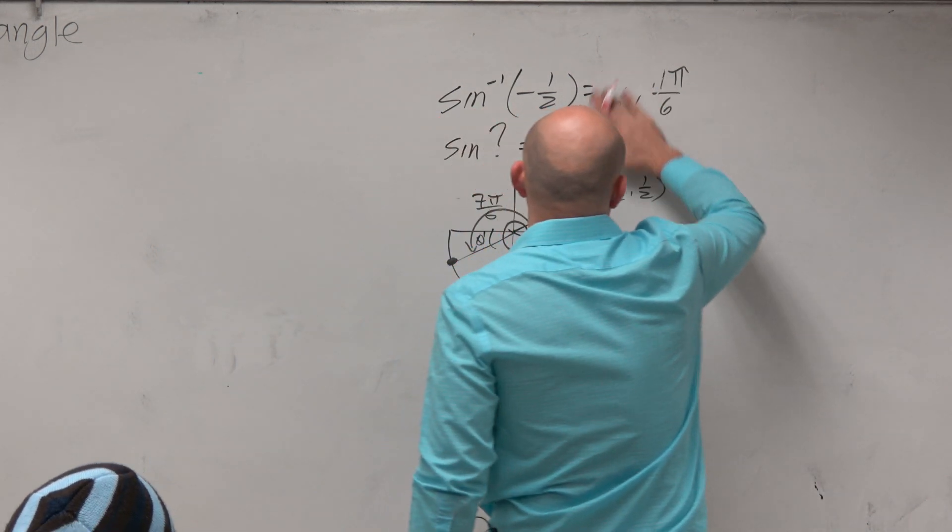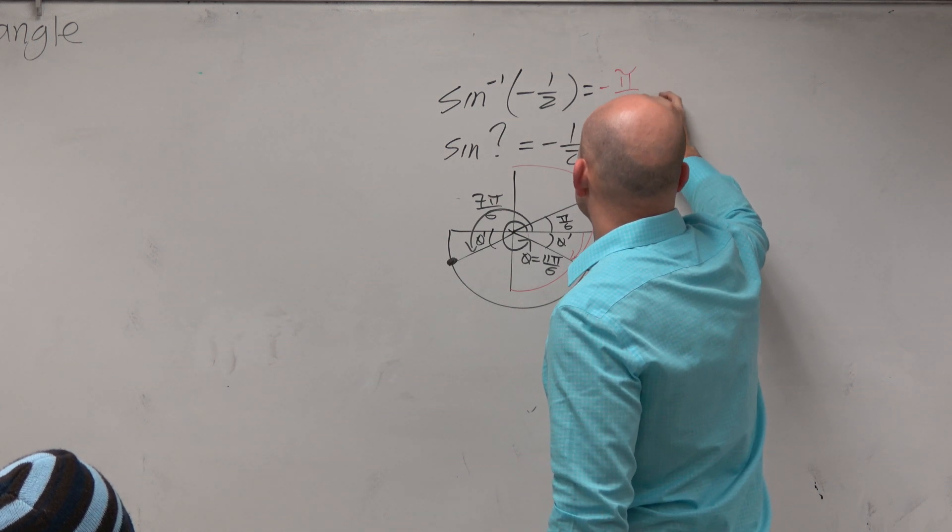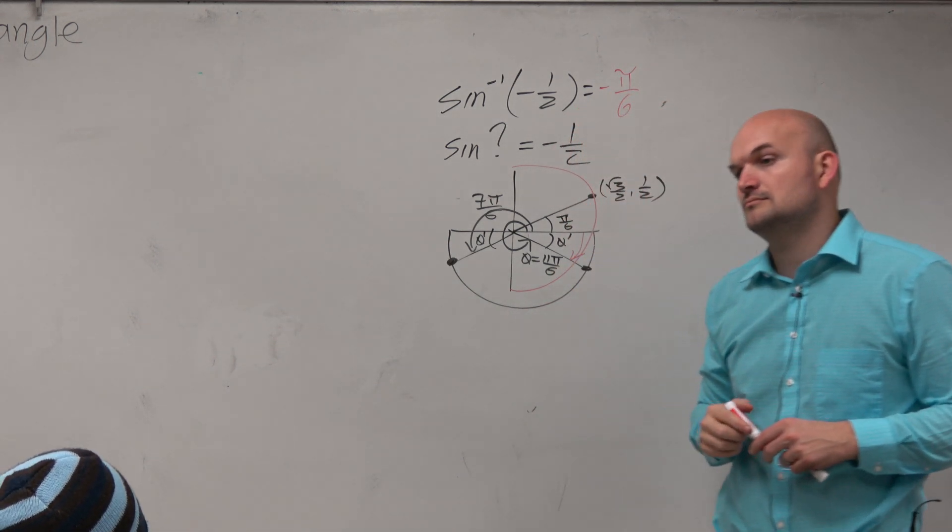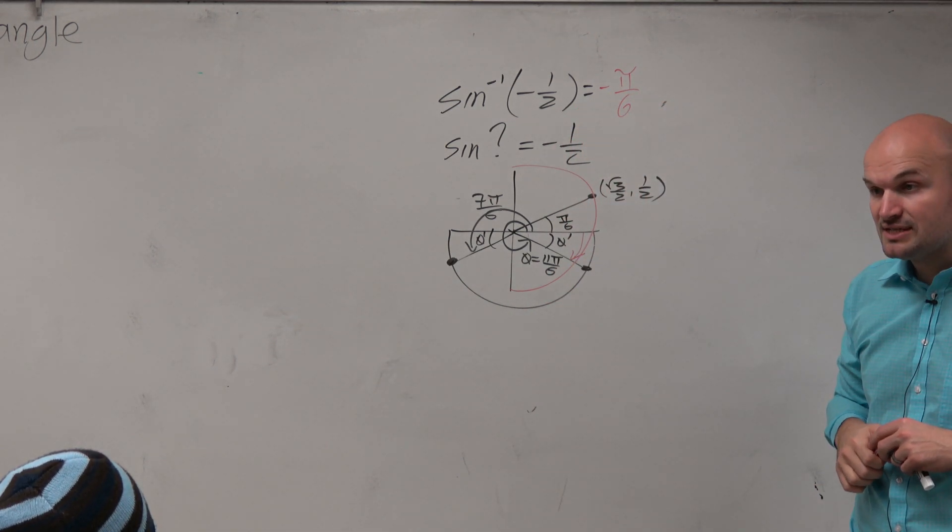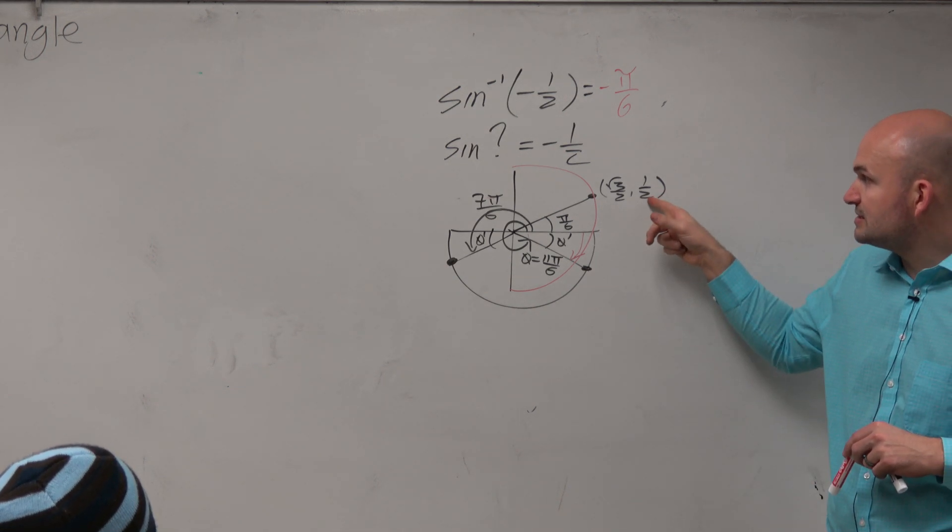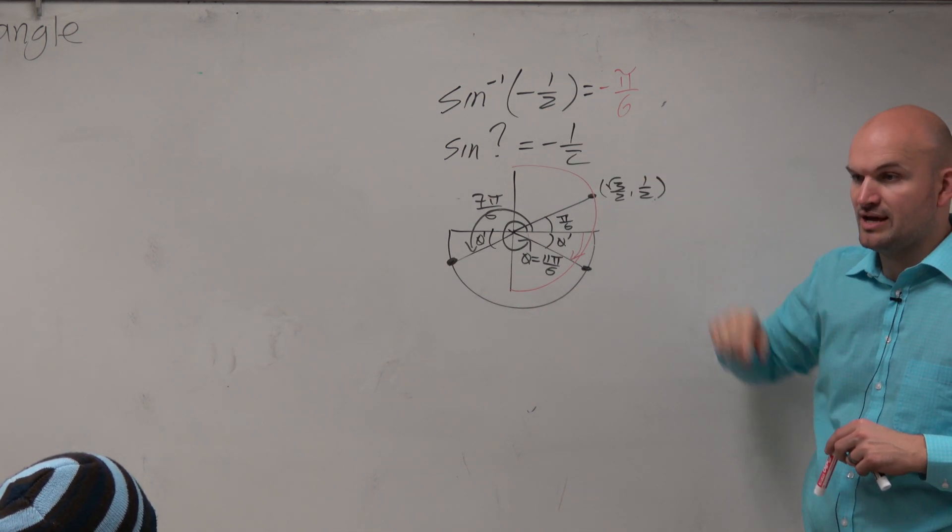And that's why the answer is negative π/6. Wait, then why not π/6 if it's in the region? Because π/6 gives you 1/2. We're taking the sine inverse of negative 1/2.